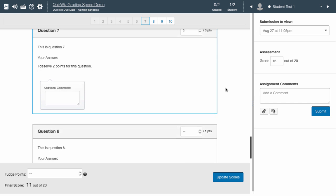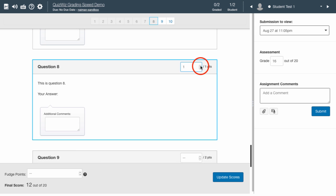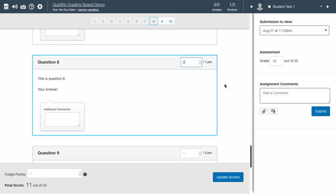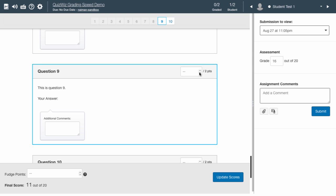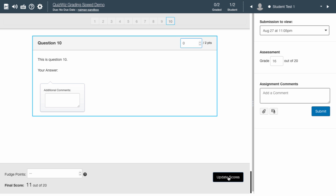The last three questions were not answered. It takes two clicks each to assign zeros. One final click, for a total of 22, updates the scores.